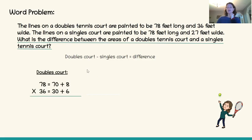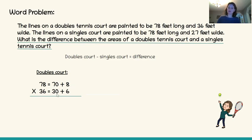The first way: I know the doubles court is 78 feet long and 36 feet wide, so I'll figure out how many square feet are in a doubles court. I'm going to use expanded notation. So 78 times 36 — expanded as 70 plus 8 times 30 plus 6. We are going to multiply 6 times 8, 6 times 70, 30 times 8, and 30 times 70.